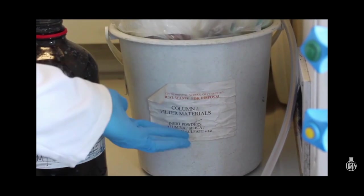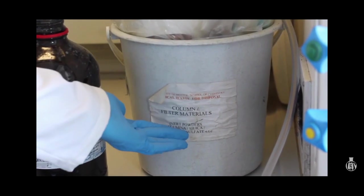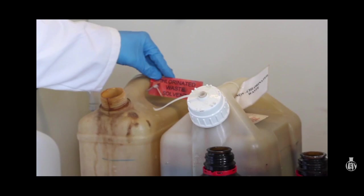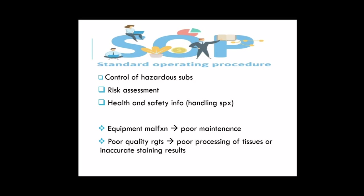Obsolete chemicals should be properly disposed of. SOPs, or standard operating procedures, must be detailed to include control of hazardous substances, risk assessments, and other health and safety information relevant to handling specimens. Equipment malfunction due to poor maintenance and poor quality reagents can result in poor processing of tissues or inaccurate staining results.